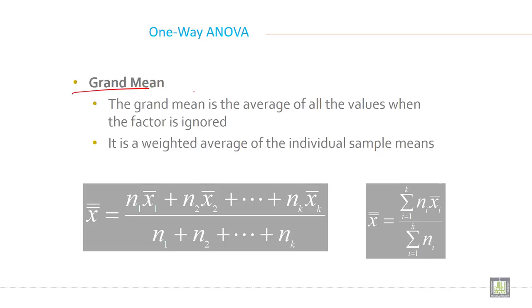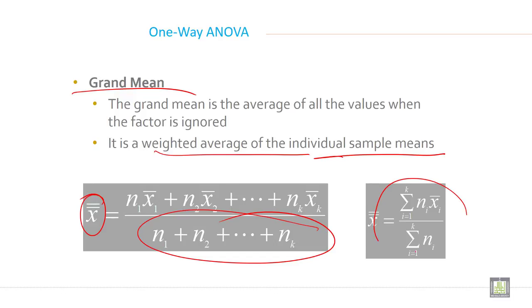Now, grand mean. The grand mean is the average of all the values when the factor is ignored. It is the weighted average of the individual sample means, like this X double bar. So N1 times X1 bar plus N2 times X2 bar plus NK times XK bar, divided by N1 plus N2 plus NK. This is the grand mean.